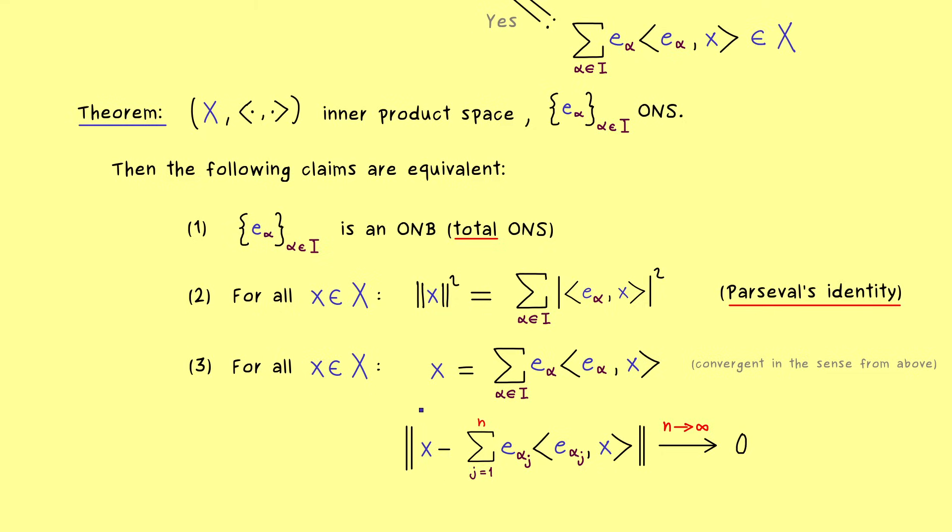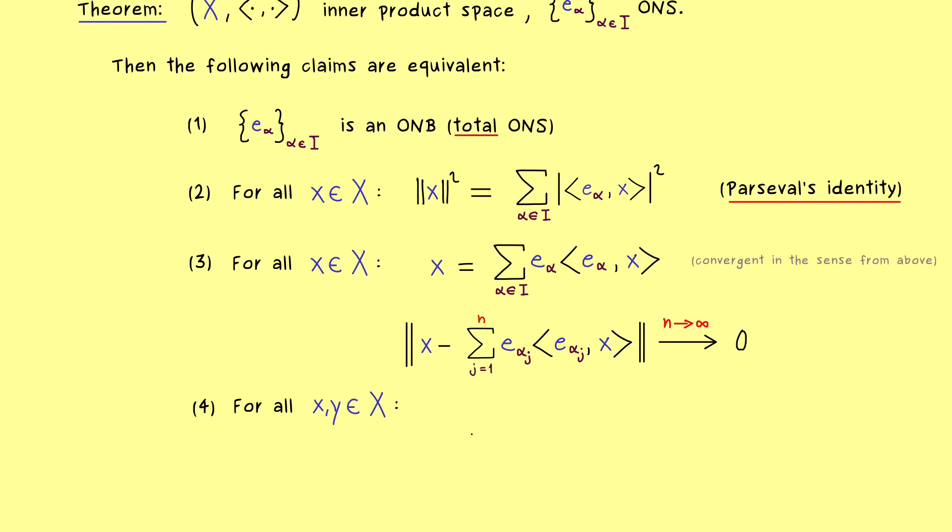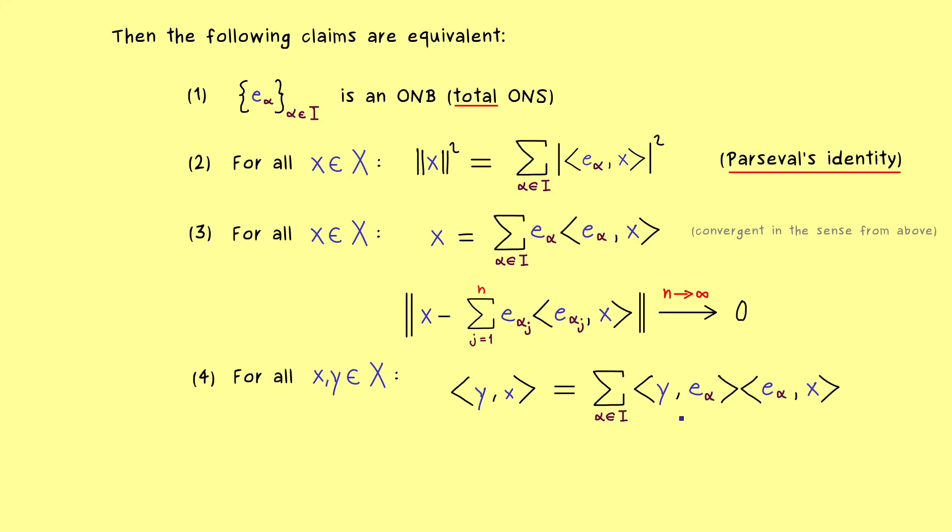Moreover, in a similar way, we also have such a convergence when we consider the inner product between two vectors. So just take two vectors x and y and consider the inner product y with x. Then this can be reformulated by taking an infinite sum with the ONS again. However, there we first have y with e_alpha and then e_alpha with x. So you can just remember that we have e_alpha in the middle and the convergence of the series is given in a similar way as before. Indeed, it's even a little bit simpler because here we just have convergence of complex numbers. Therefore, this convergence can be just written with respect to the absolute value in C. Otherwise, it's exactly the same thing as before. Furthermore, it does not matter which enumeration we choose. We always get this convergence to zero when we send n to infinity.